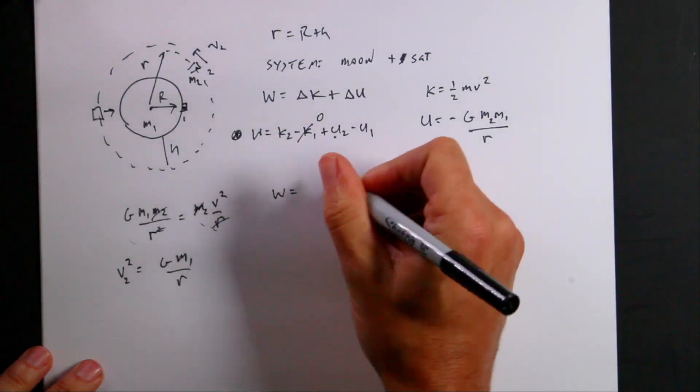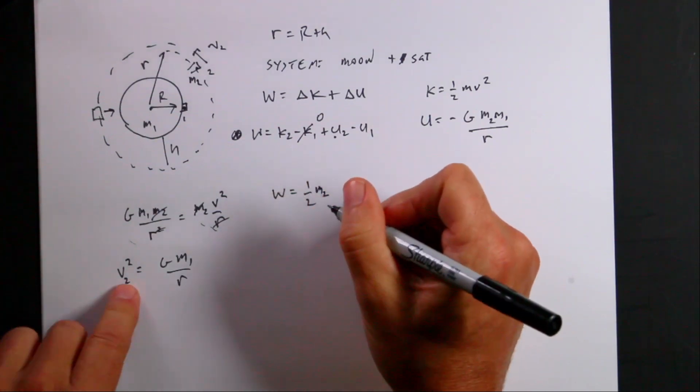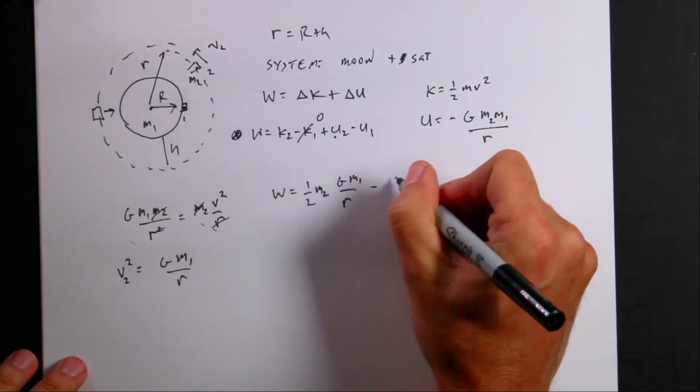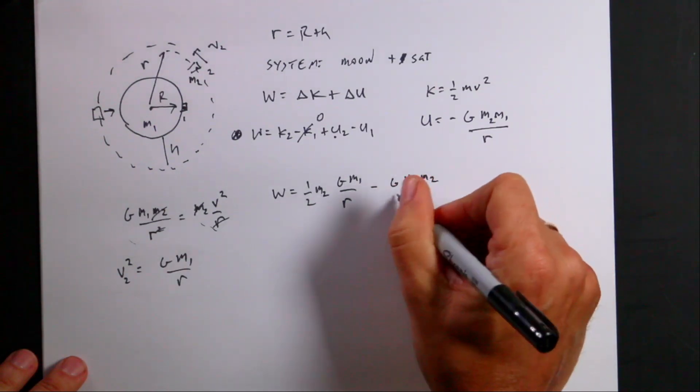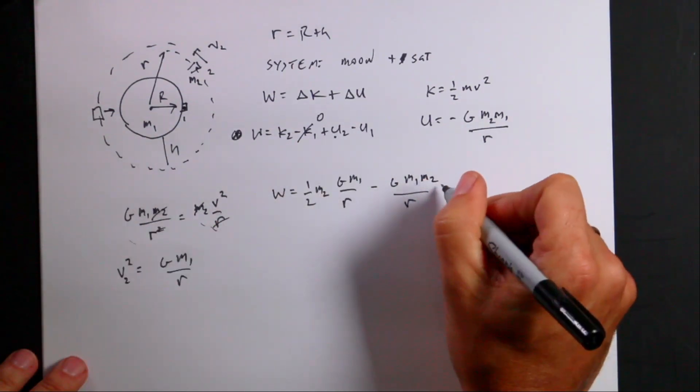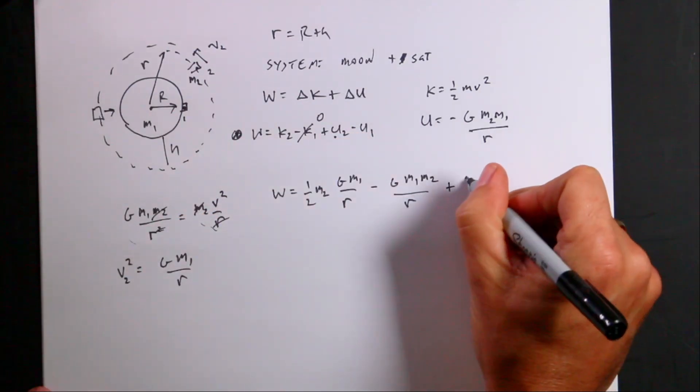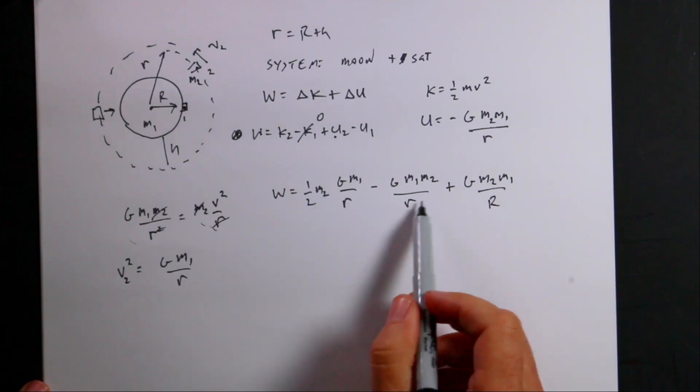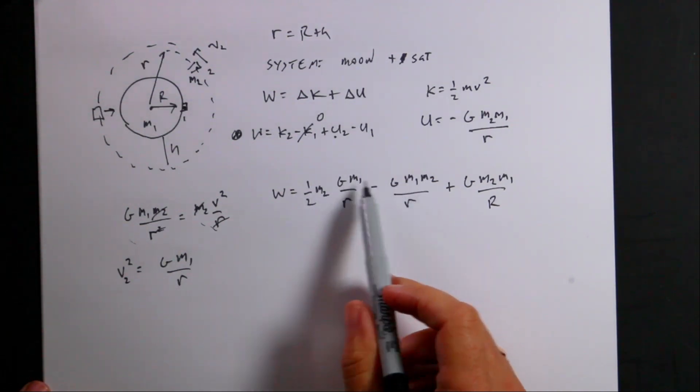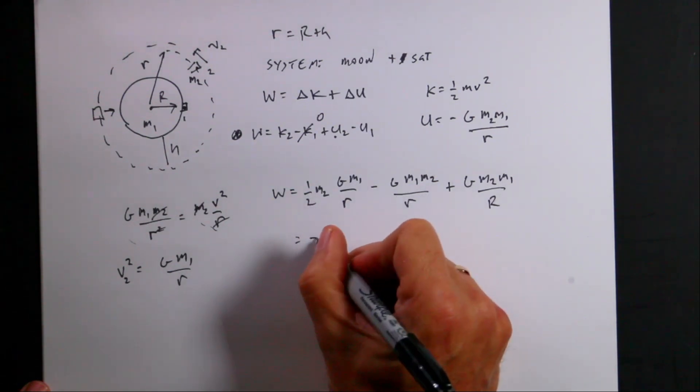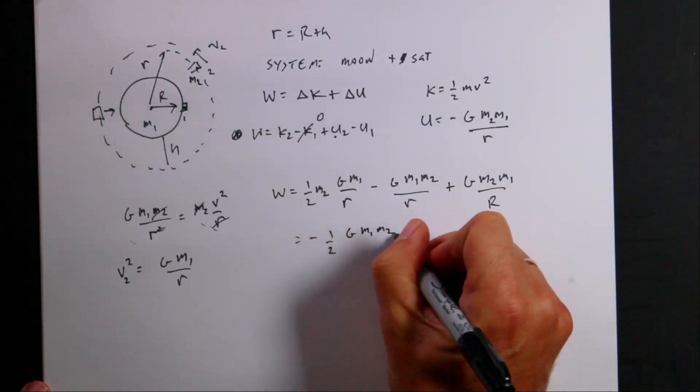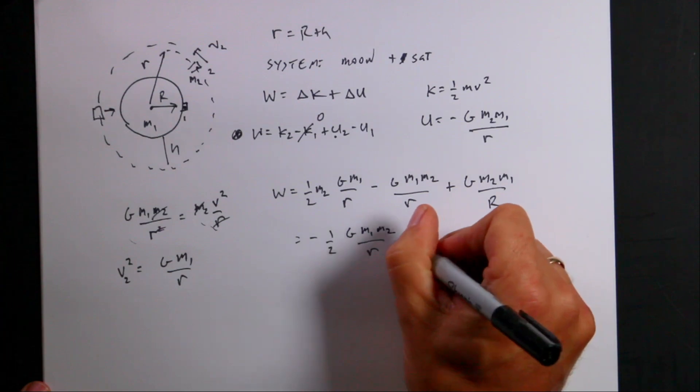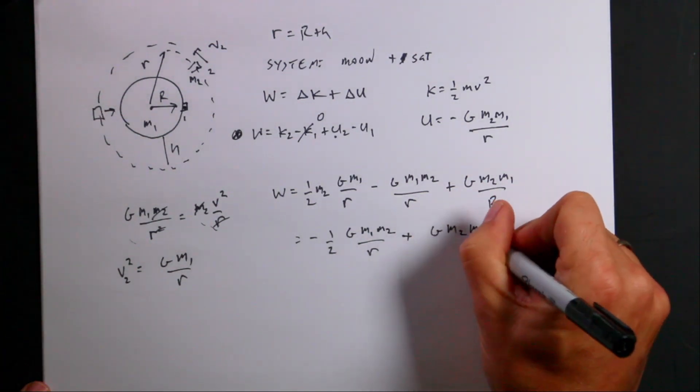Okay, we're pretty much ready to plug stuff in. So work is the final kinetic energy, one-half m2 v2 squared, g m1 over r, and that's the second distance. And then plus u2, which is going to be minus g m1 m2 over r, which is, right, because that's r plus h is r. And then minus u1, so it's going to be plus, minus a negative, is plus g m2 m1 over big r, which is the radius of the moon. Now, you'll notice here that I have these two terms I can combine together, because they both depend on r. They both have the same thing. So I have a half and then the full. So this is going to be negative one-half g m1 m2 over r. Now, you don't have to do that, right? I could calculate that as a number and that as a number, but if I don't have to do it, I don't want to do it.